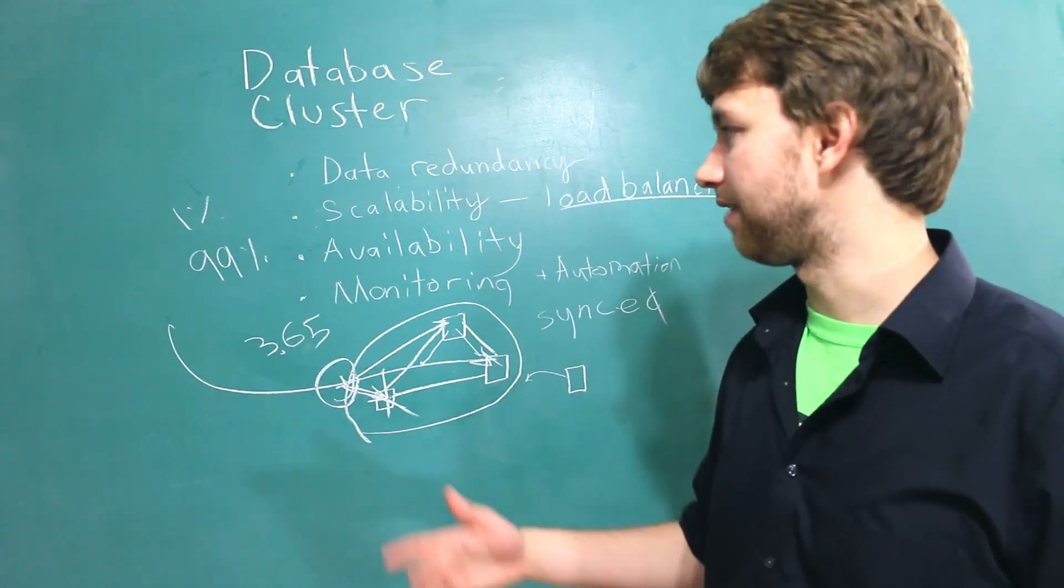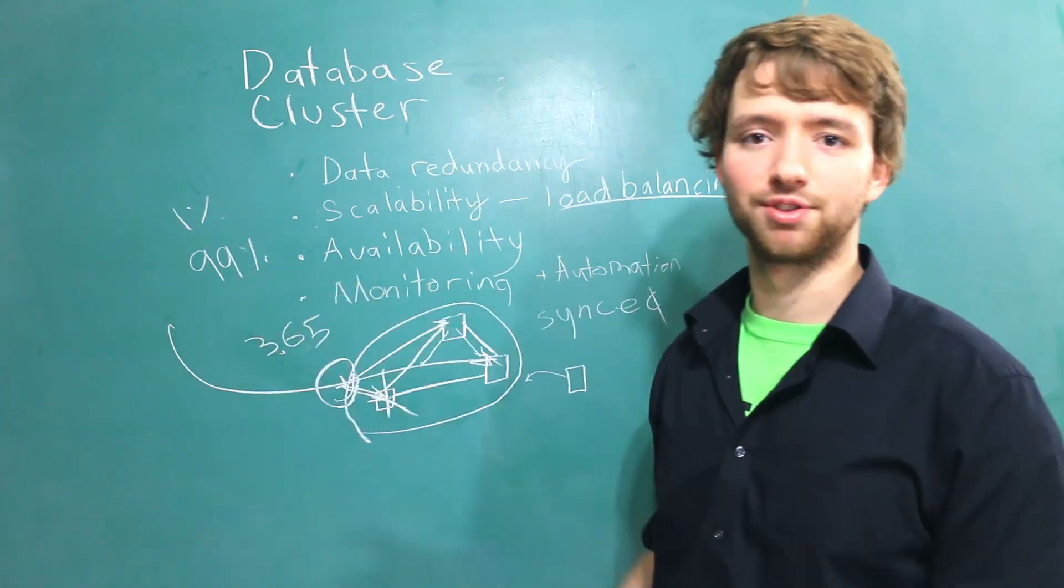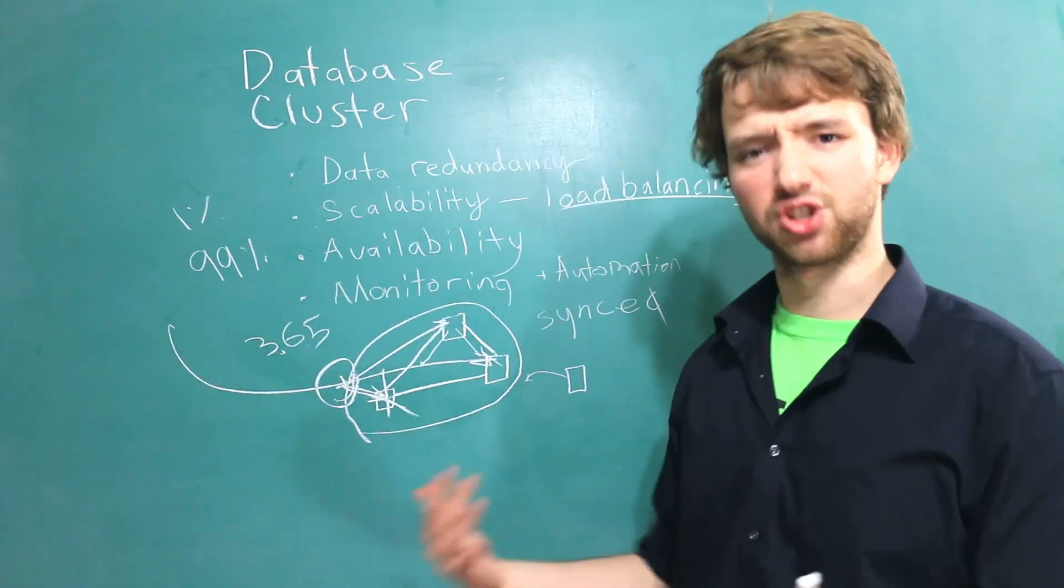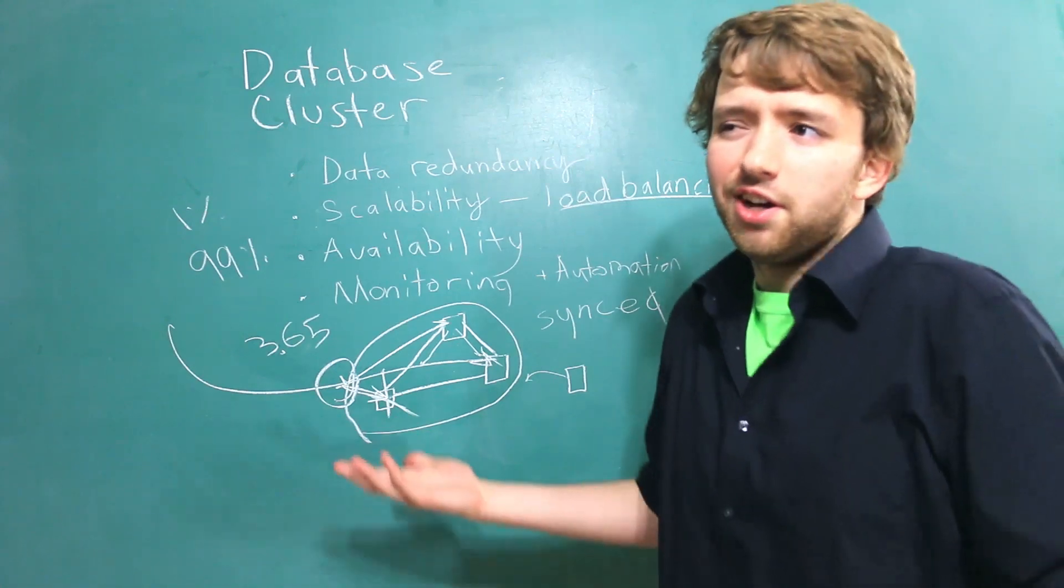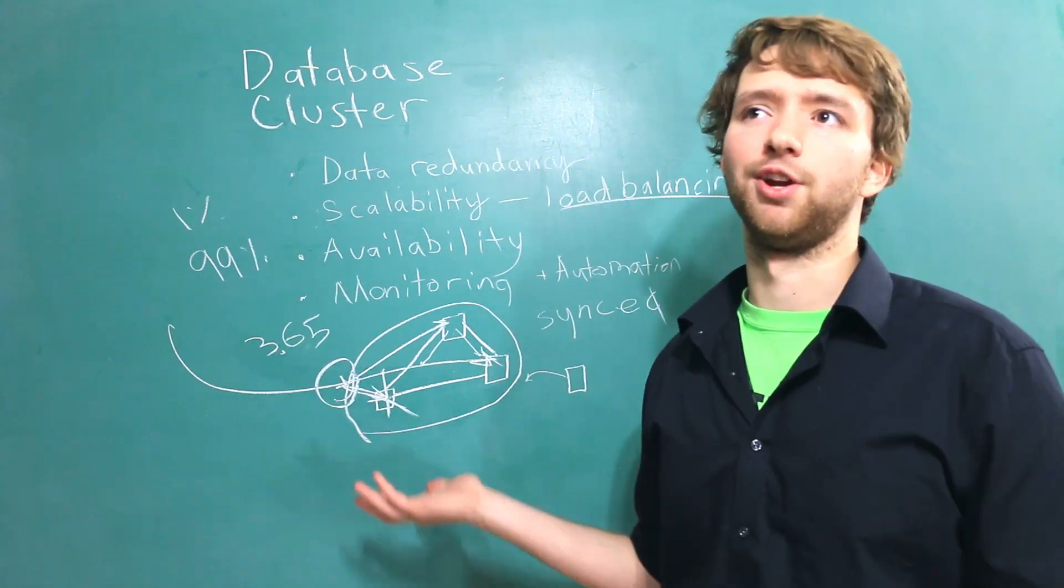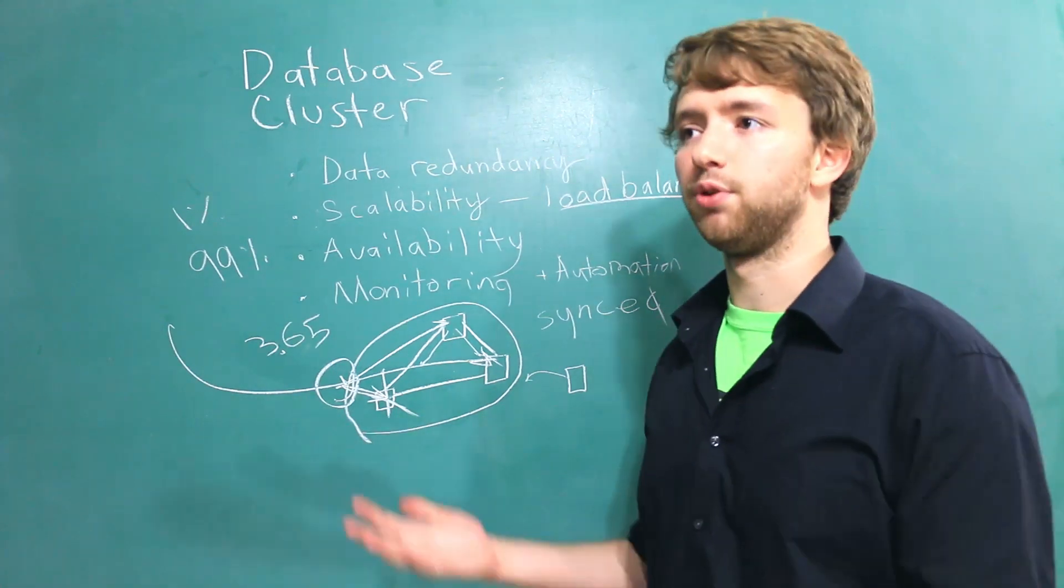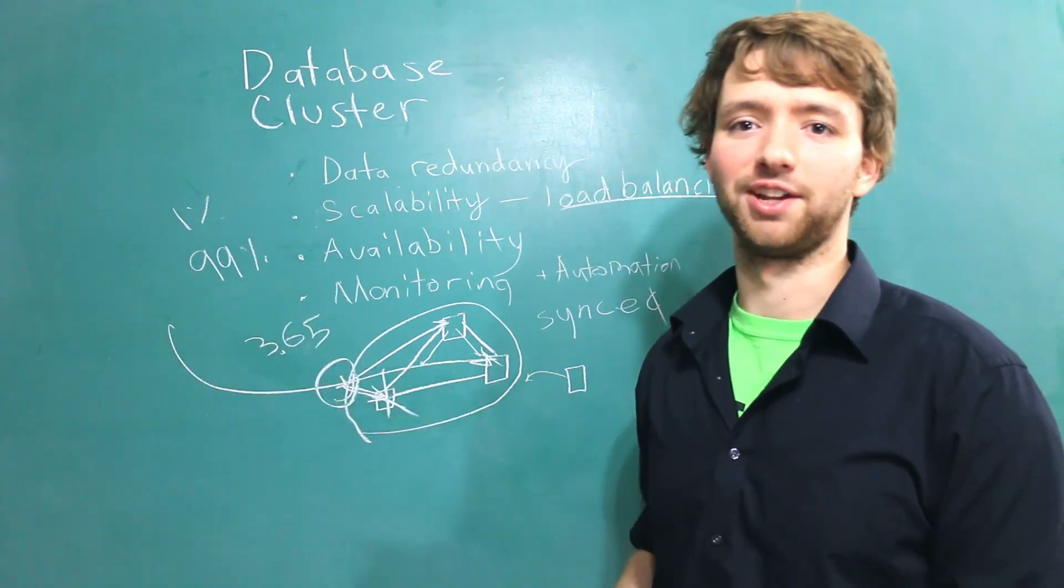For example, if a mom and pop shop can save some money by going to 99% and not paying extra for that extremely high availability, you know, three and a half days down out of the year, that's not that bad. But if you were like Google, like that's really not that good.